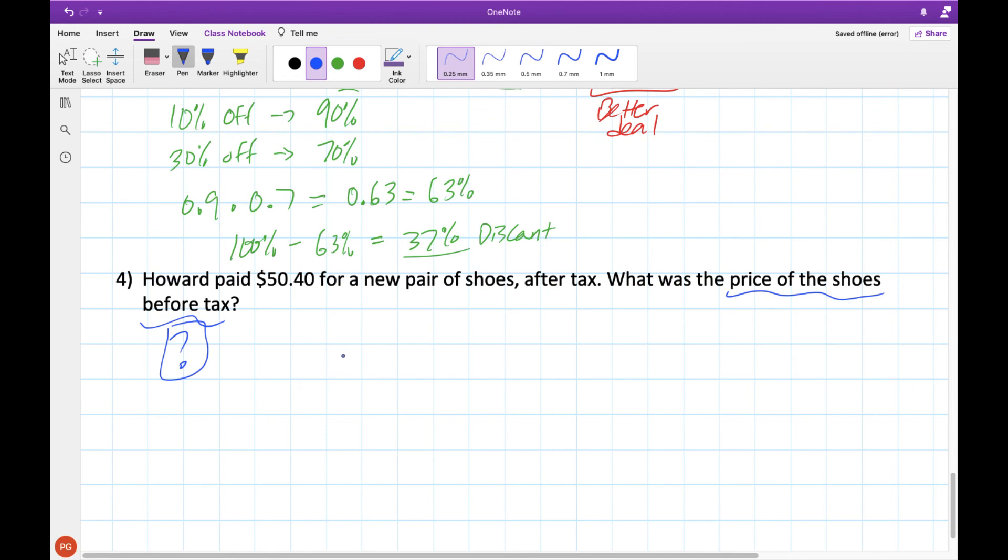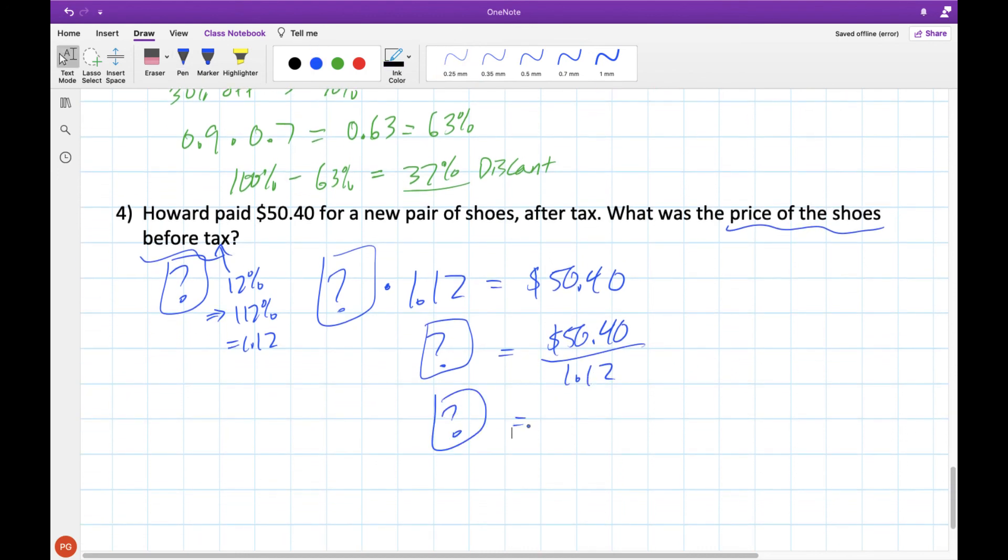Because we know this tax is 12%, which means we would pay 112%, or 1.12%, times whatever our original price is. So whatever this price is, we'd multiply it by 1.12% to get an answer of $50.40. So what times 1.12 gives us $50.40 is the same as saying $50.40 divided by 1.12. And we can punch that into our calculator. And if you do, you'll get an answer of exactly $45.